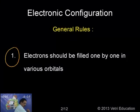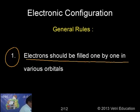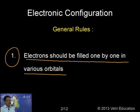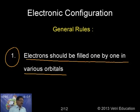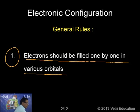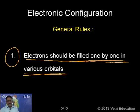Rule 1: Electrons should be filled one by one in various orbitals. In the first level (n=1), there is only one orbital — 1s. In the second level, there are 4 orbitals: 1s, and 3p orbitals. In the third level, there are 9 orbitals total. We fill them in order: 1s, 2s, 2p, 3s, 3p, 3d, etc.